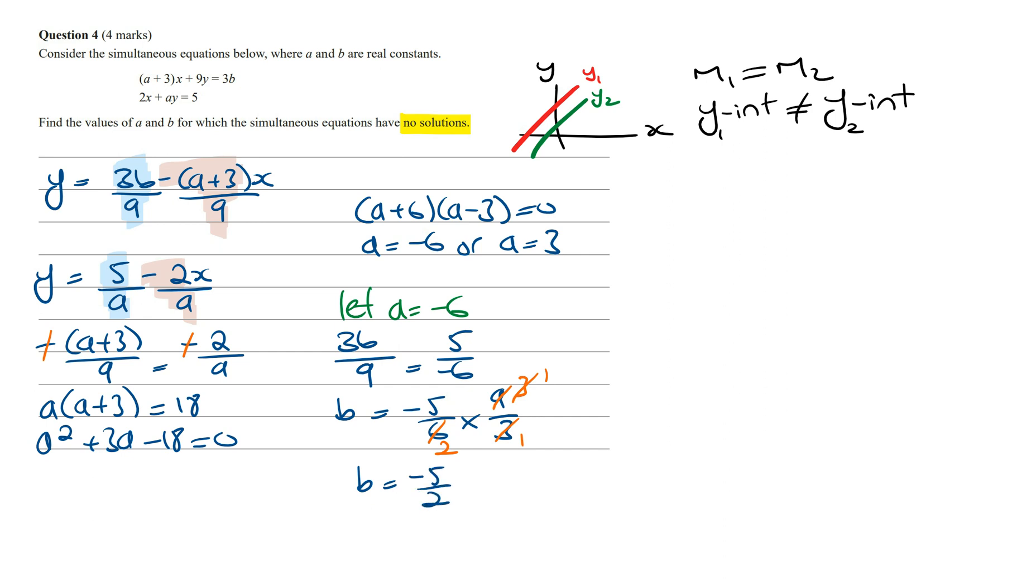This means when B is equal to minus 5 on 2, we're going to have the same Y-intercept when A is equal to minus 6. And so when A is equal to minus 6, B cannot equal minus 5 on 2. But it can equal any other number.